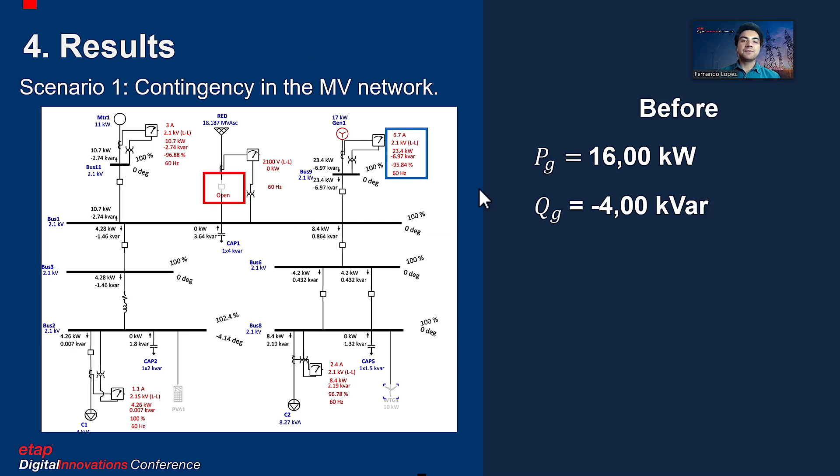Results. Scenario 1: Medium voltage grid contingency. With the data captured in real-time, we proceed to simulate the opening of the mains breakers so that the Gen1 generator is overloaded by 148.20%, delivering an active power of 23.40 kW and a reactive power of 6.97 kVAr to supply the demand.